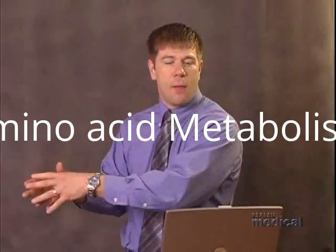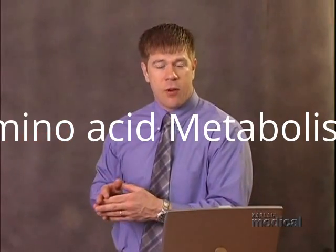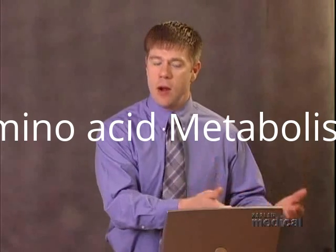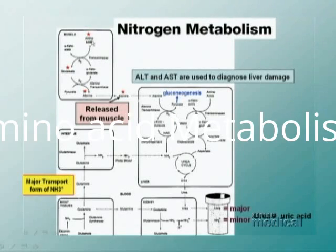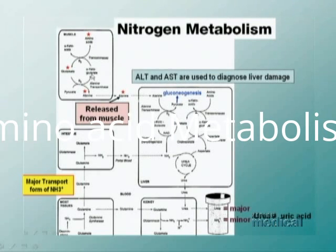The hot potato amino group gets passed from one alpha-keto acid to another. For each amino acid there's a different transaminase catalyzing these reactions. An important point: the vitamin required for transamination reactions is vitamin B6. The main amino acid released from muscle is alanine, which travels to the liver.